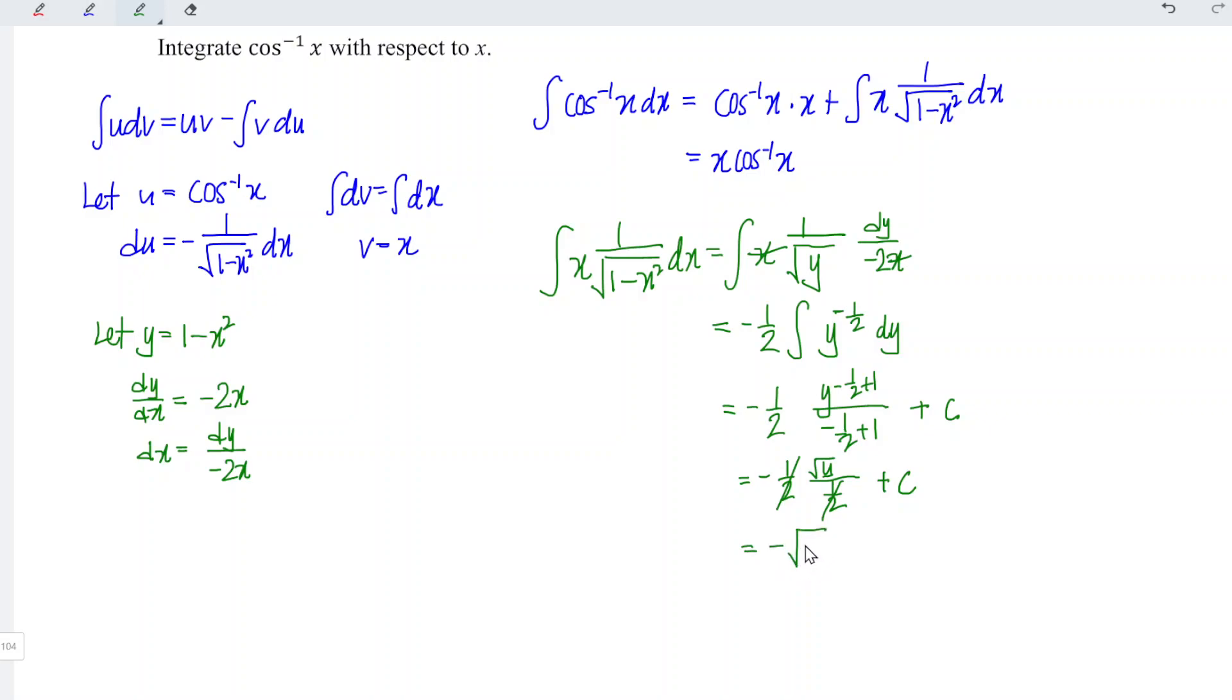And y is equal to 1 minus x square. So the second term is equal to minus square root of 1 minus x square plus c.